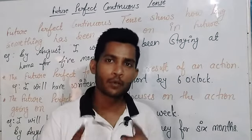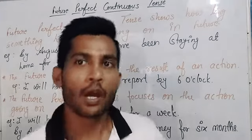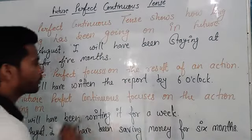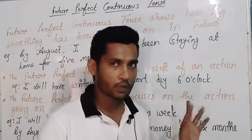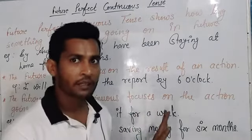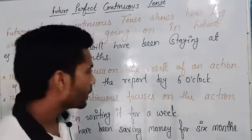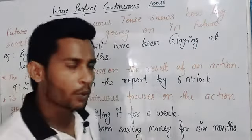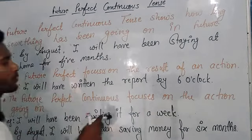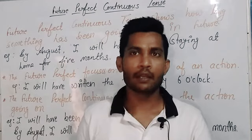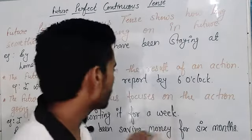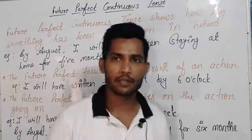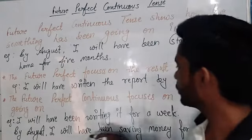In future perfect continuous tense we talk about the continuity of an action with duration — how long something will have been going on in future. Look at the example: 'I will have been writing it for a week.' I will have written the report by six o'clock, but how long have I been writing this report? For the last six or seven days. By today, by evening, I will have been writing it for a week — it has taken almost a week to complete this report. Last example: 'By August, I will have been saving money for six months' — focusing on continuity rather than completion.